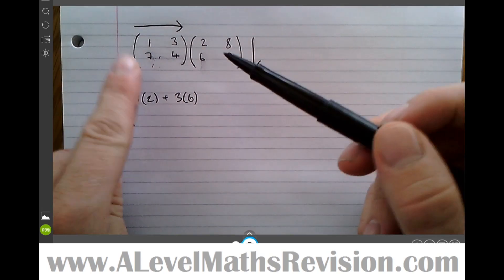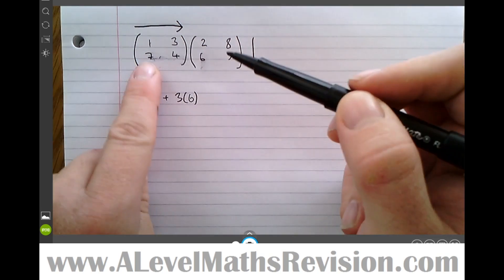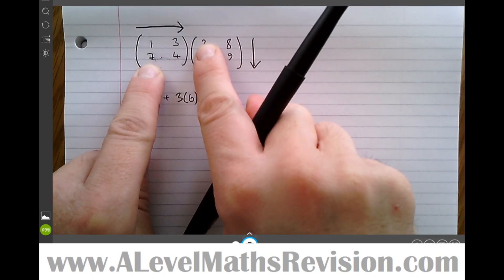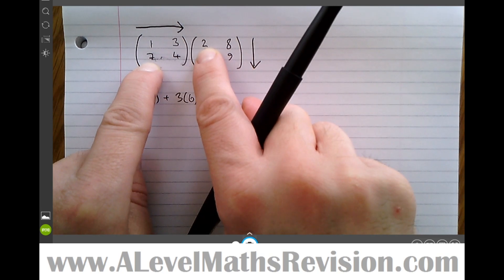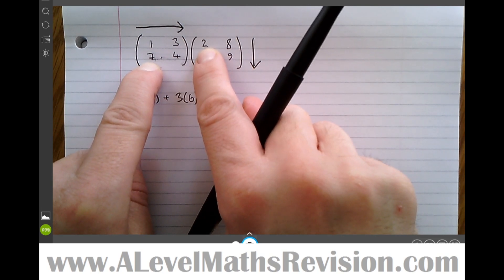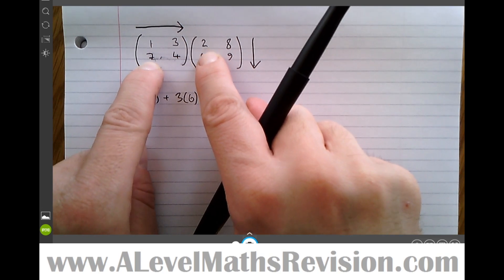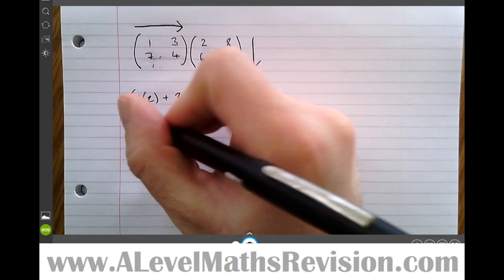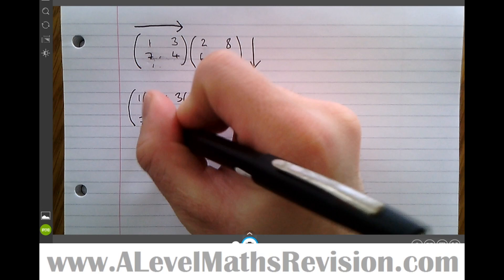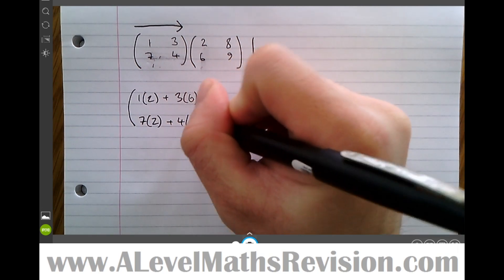Now I'm going to choose to start at the bottom row of the first matrix but still stick with the left of the second. Bottom and left makes the bottom-left entry of the answer matrix: seven times two plus four times six.